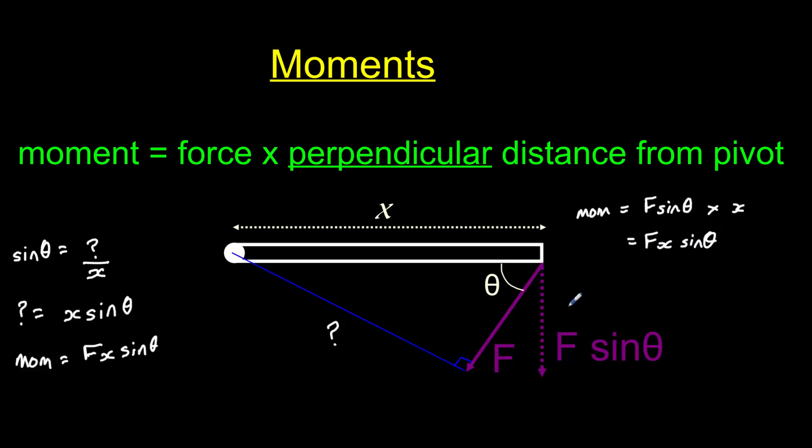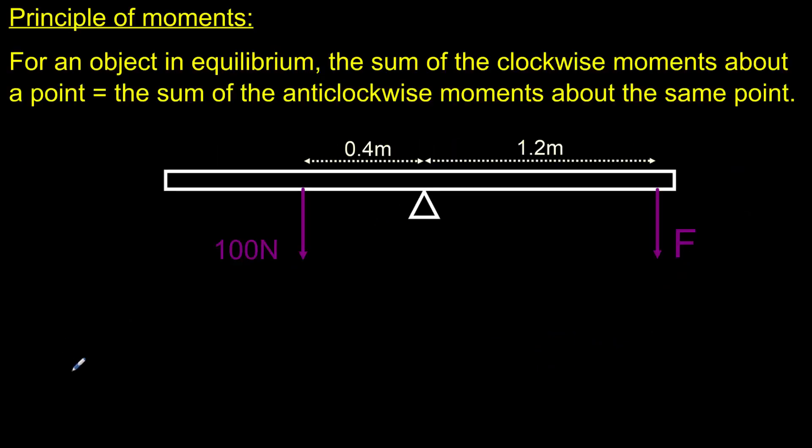So whichever method you prefer, you end up with the same answer ultimately, F X sine theta. Let's now take a look at the principle of moments. That says that for an object in equilibrium, the sum of the clockwise moments around a point is equal to the sum of the anticlockwise moments around the same point.